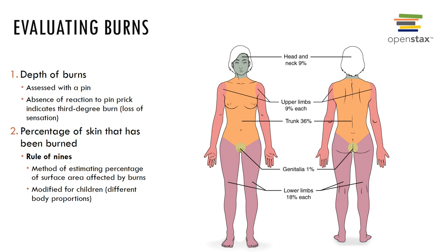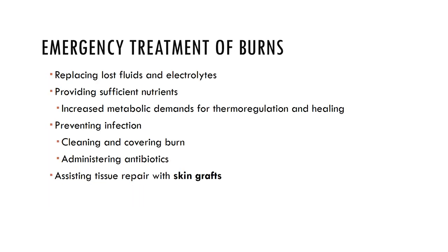Burns are evaluated based on depth and the percentage of skin burned. The rule of nines is used to estimate the volume of fluid loss, helping physicians determine how much fluid replacement to give the patient. Emergency treatment involves replacing lost fluids and electrolytes, providing nutrients, preventing infection, and sometimes assisting tissue repair with skin grafts. Burns are critical if greater than 25% of the body has second degree burns, greater than 10% has third degree burns, or if the face, hands, or feet bear third degree burns.